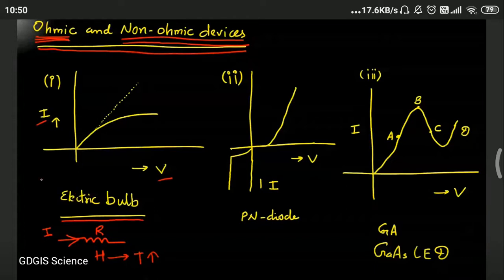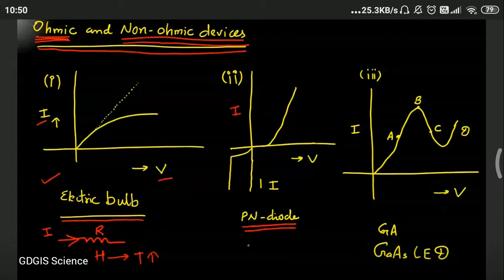Now second, we talk about PN diode. PN diode actually is a semiconductor device, and you can see the graph between current and voltage for the semiconductor is not a straight line.